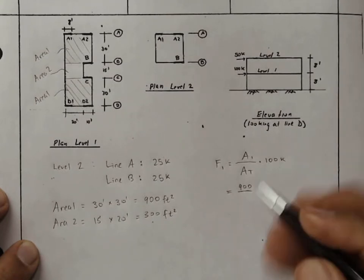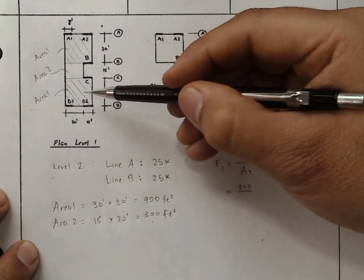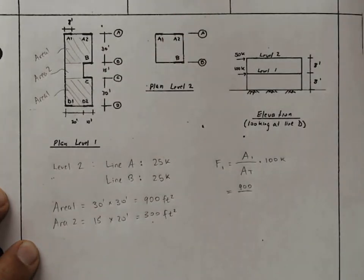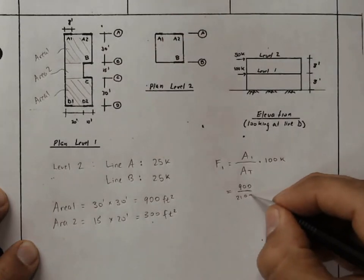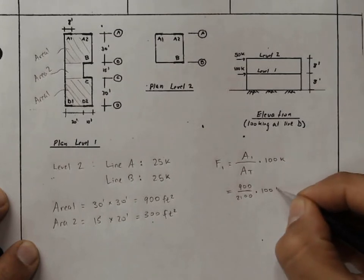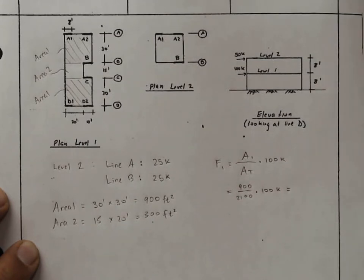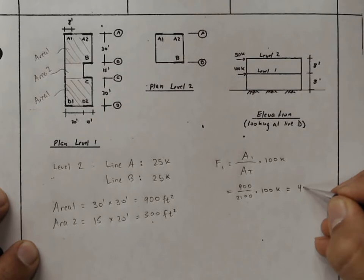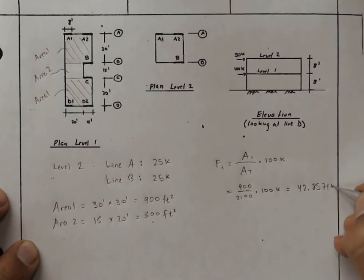The total area is twice 900, one for each of these, plus another 300, that's 2100, times 100 kips. If we work that out, that's 42.9, or we'll keep a few more decimals, 8571 kips.